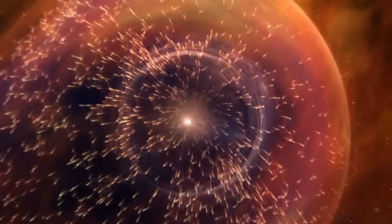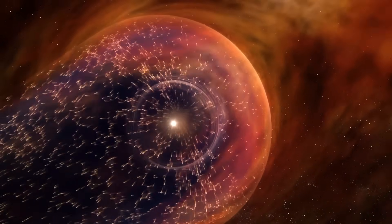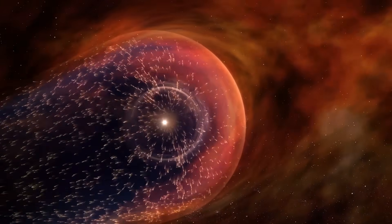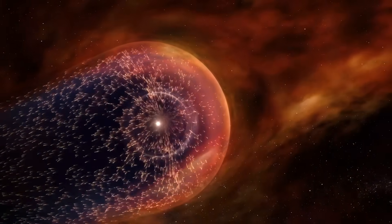The only surprise in the data sent by the Voyagers was not the temperature. Just outside the boundary, the interstellar magnetic field was found to be surprisingly aligned with the Sun's magnetic field inside the heliosphere. This was a major puzzle.